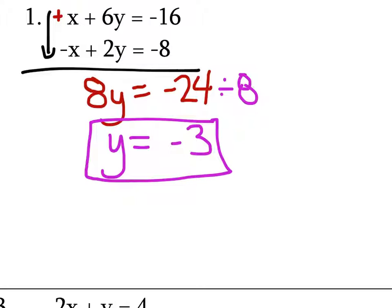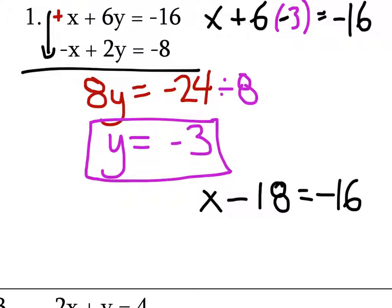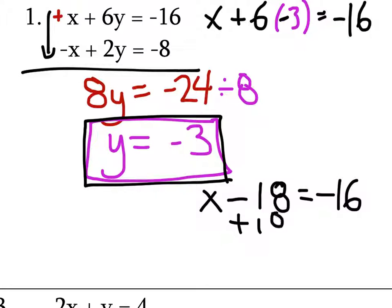That's only half the problem. Now that we know Y is negative 3, let's solve for X. Let's look at our first equation: X plus 6 times Y, which is negative 3, equals negative 16. So you'd have X minus 18 equals negative 16. Why is it minus 18? Because Y equals negative 3, so 6 times negative 3 is negative 18. Add 18 to both sides — X equals 2.